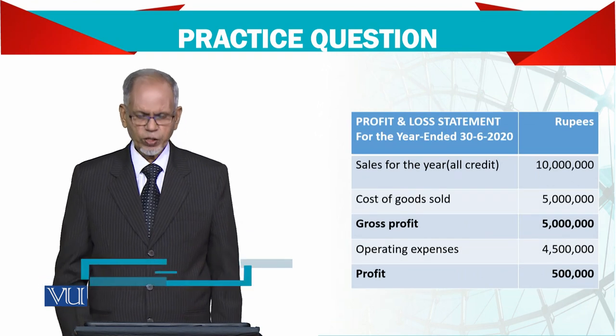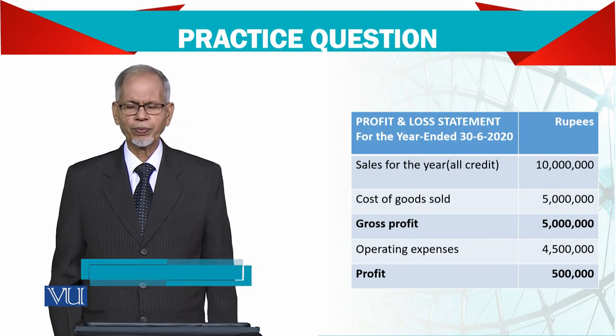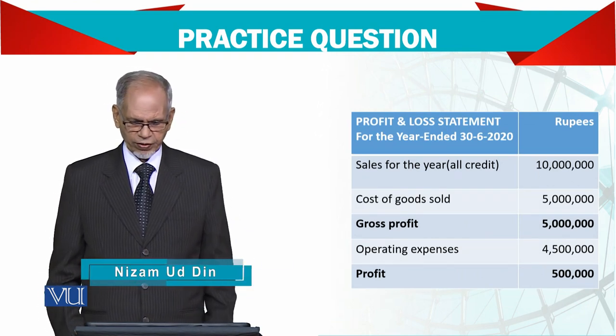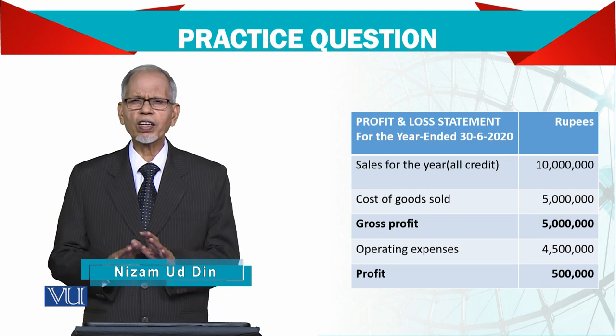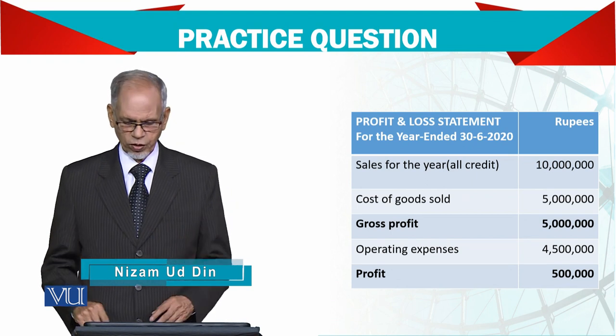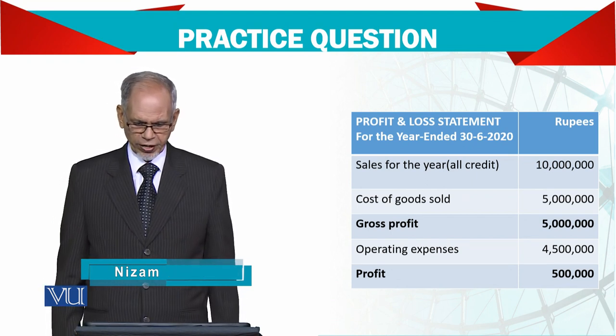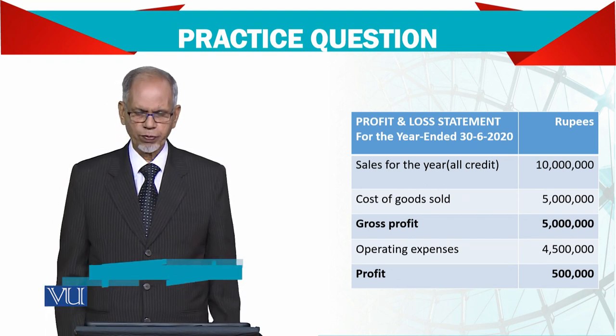Then we have the income statement also. In the income statement, again we have sales — and all credit sales, no cash. Cost of goods sold, gross profit, operating expense, and profit.